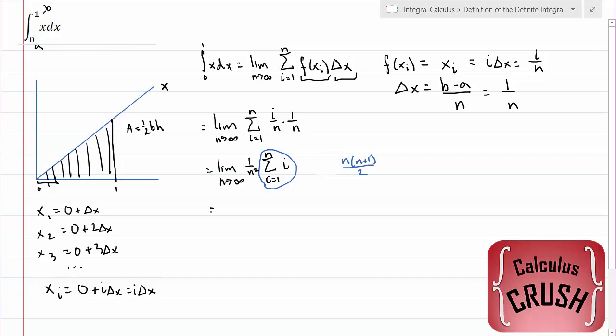So substituting that in, we have the limit as n goes to infinity. Be careful when you're writing these limits here. It's easy to write n goes to 0, because that's how we do it for the differential calculus, the derivative, when we're using the definition of the derivative. The definition of the integral is n going to infinity.